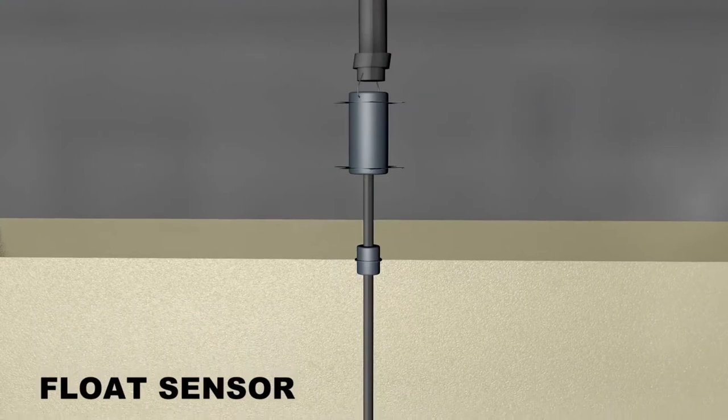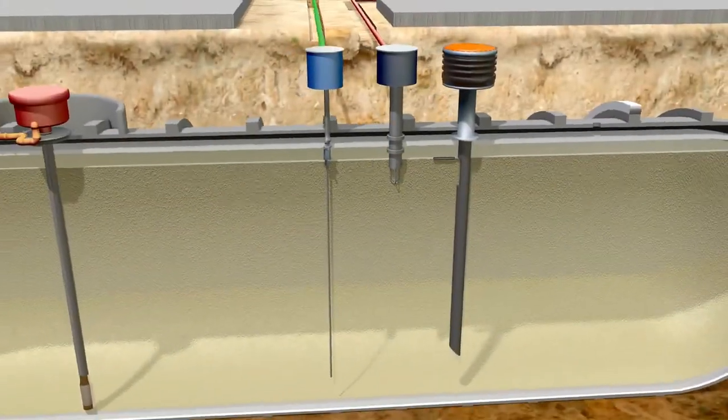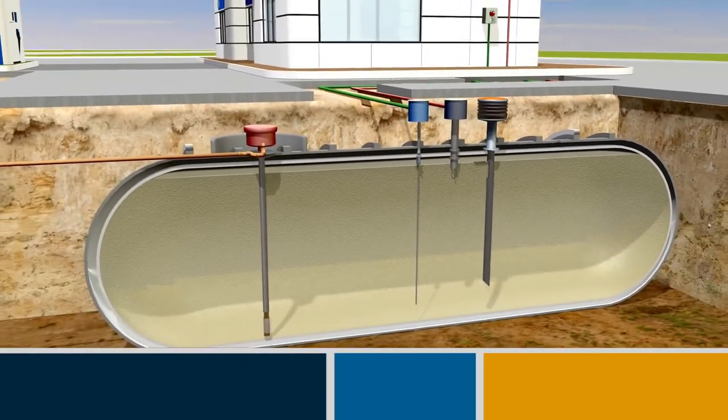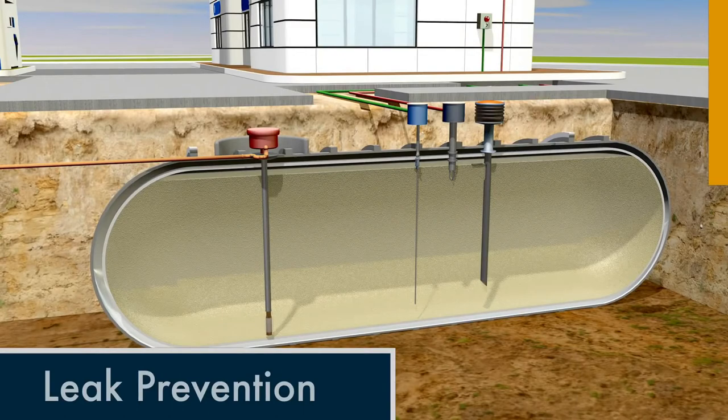A float sensor alerts the operator if fuel reaches the target level. Once fuel is in the tank, it's important to make sure it stays secure until it's dispensed. That's why leak prevention is another essential part of the safety story.